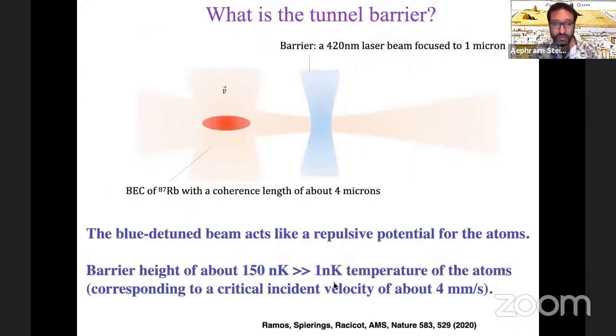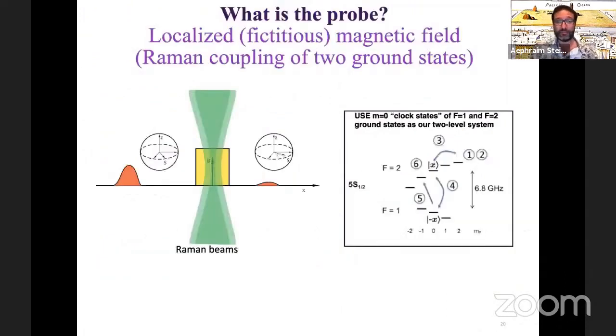But what I wanted to say is that if we now push these atoms with a magnetic field towards the barrier at about four millimeters a second, half of them will be transmitted and half of them will be reflected. At five millimeters per second, they're almost all transmitted. At three millimeters per second, they're almost all reflected. So that's going to be our tunneling experiment.